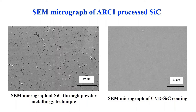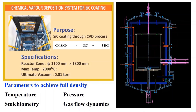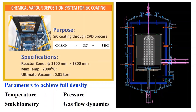ARCI has developed the process technology for producing lightweight silicon carbide substrates of various shapes and sizes. Sintered silicon carbide parts processed through powder consolidation can meet the structural and thermal requirements of a mirror. However, such components have limitations for use as a reflecting surface due to non-uniform microstructure and the presence of residual pores. Hence, silicon carbide substrates are usually coated with a dense coating of silicon carbide through chemical vapor deposition (CVD). Fully dense silicon carbide coating can be grown through control of various parameters including temperature, pressure, proportions of reactants, and gas flow pattern.